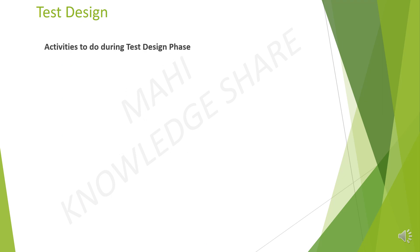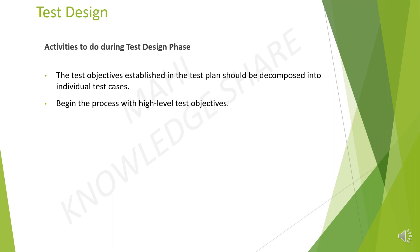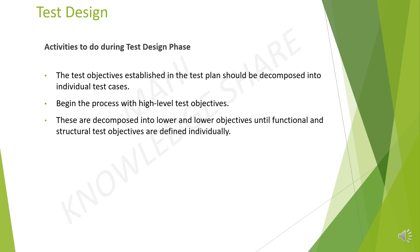Activities to do during the test design phase. First, the test objectives established in the test plan should be decomposed into individual test cases, then begin the process with high-level test objectives. Finally, the high-level test objectives are decomposed into lower and lower objectives until functional and structural test objectives are defined individually.